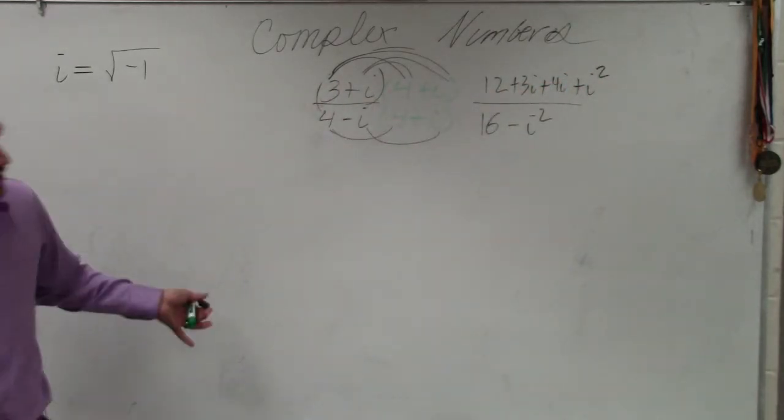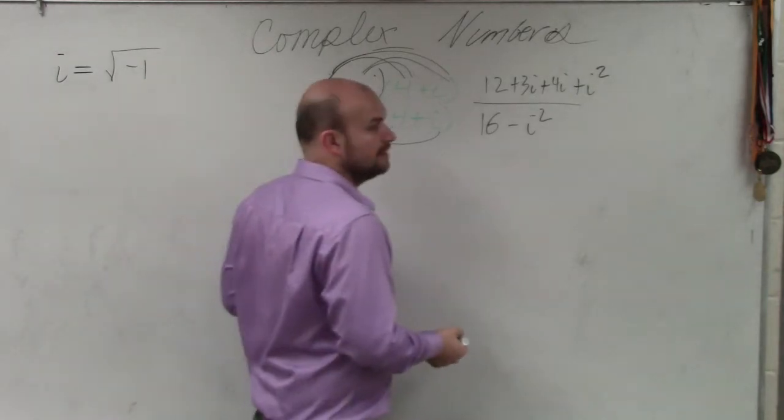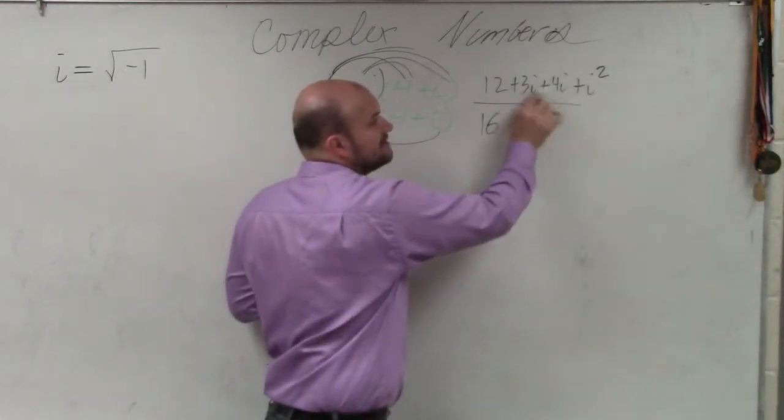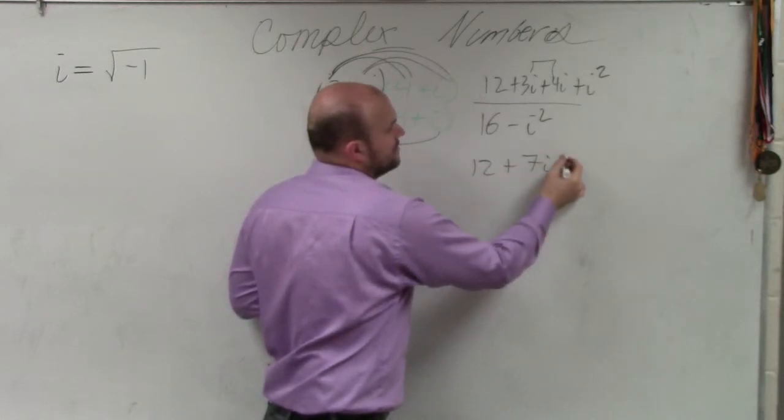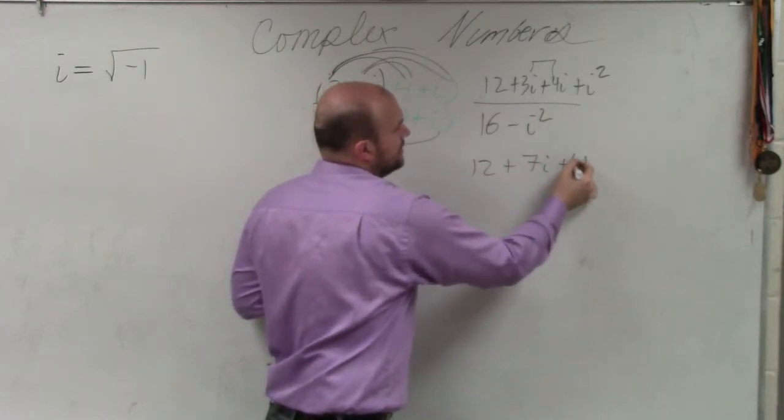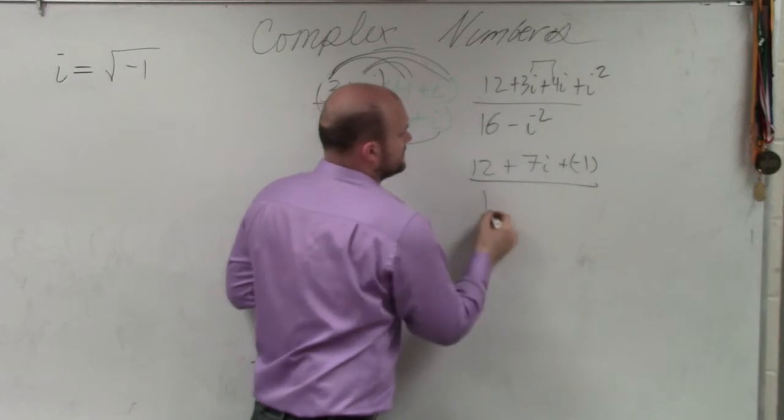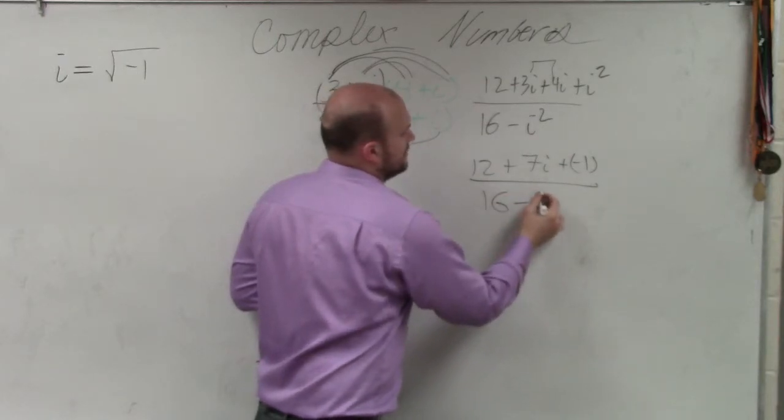Now, what does i squared equal? Negative 1. And then these two I can combine. So I have 12 plus 7i plus negative 1 over 16 minus negative 1.